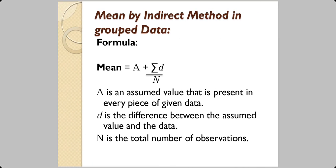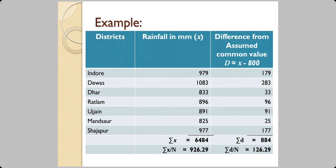Then there is an indirect method of calculating mean. The formula is A plus (Σd / n), where A is an assumed value present in all the data points, d is the difference between the assumed value and the actual value, and n is the total number of observations. Here is an example of rainfall in different districts of Madhya Pradesh.